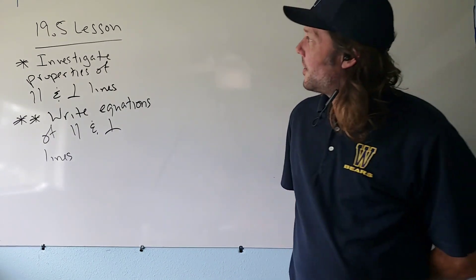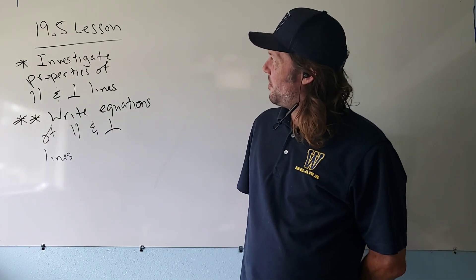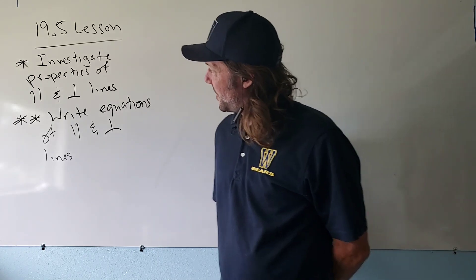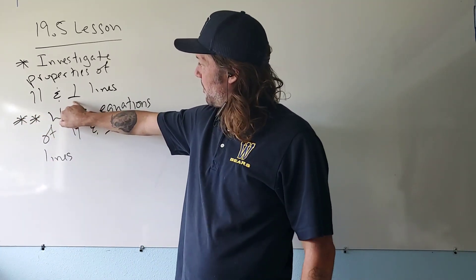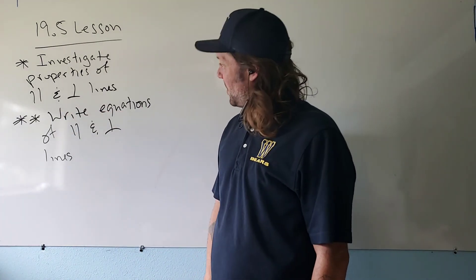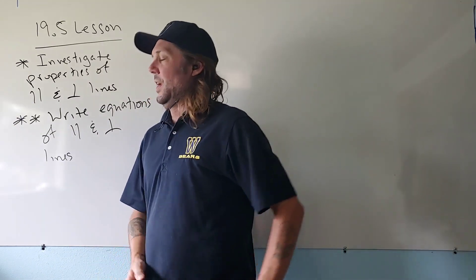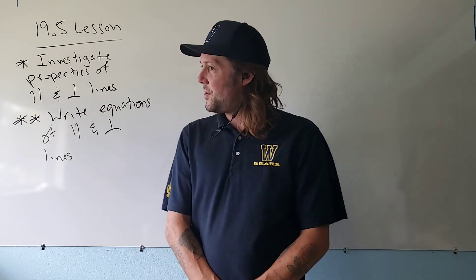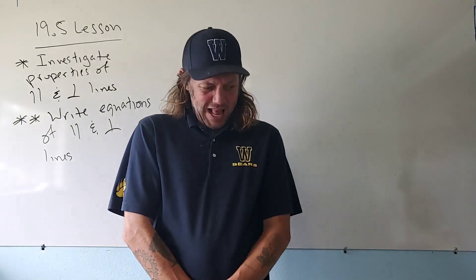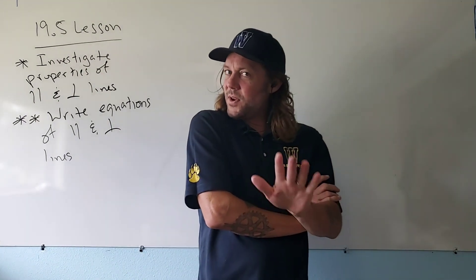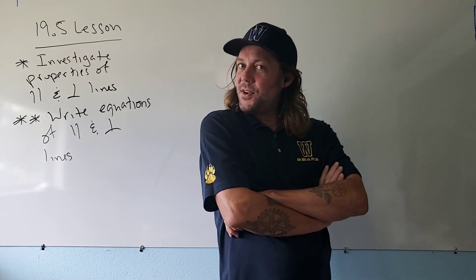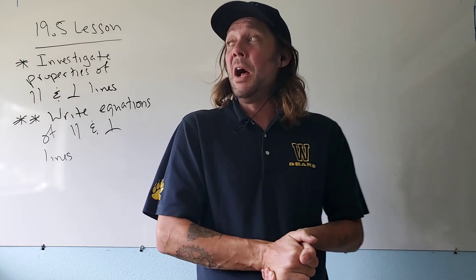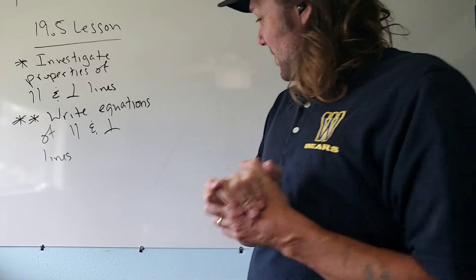Good morning. This is for my Honors Integrated One class. This is our lesson 19.5. We have two goals today: we want to investigate the properties of parallel and perpendicular lines — that's my symbol for parallel, and this is my symbol for perpendicular. I also want to be able to write equations of parallel and perpendicular lines. I'll discuss the properties first, then we'll review how to write the equations of lines.